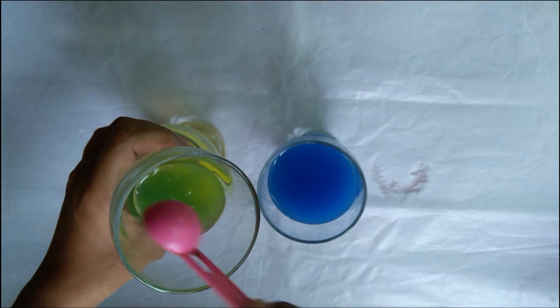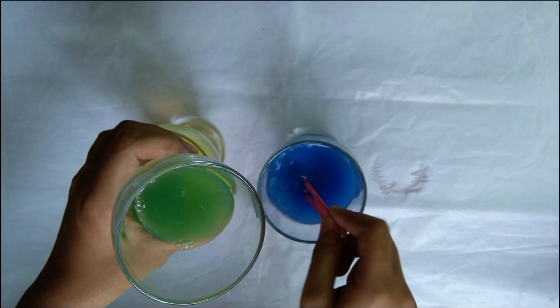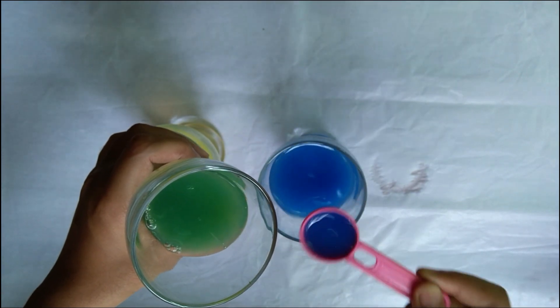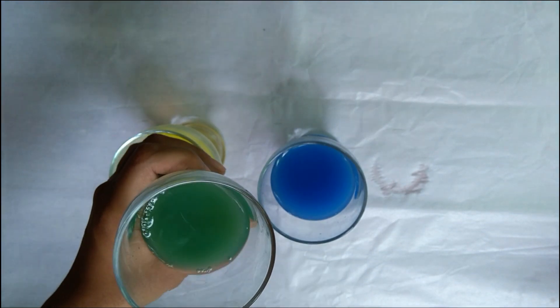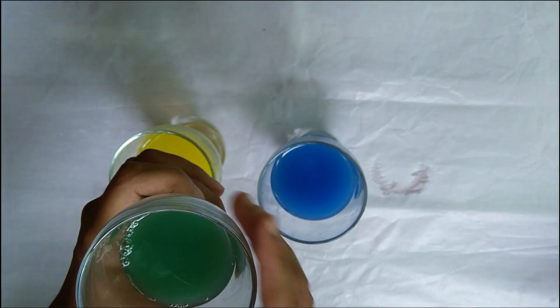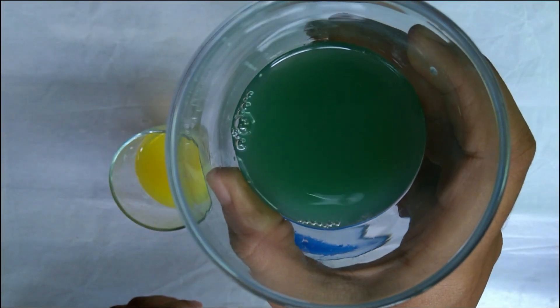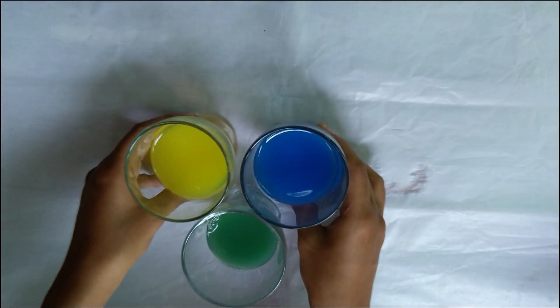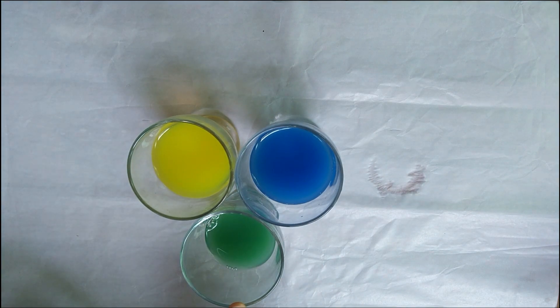As we mix the colors, we can see the changes that occur. The color that we got now is green. This means yellow and blue gives us green.